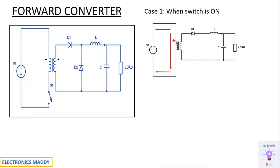The primary winding of a transformer has coils, which is essentially the property of an inductor. So let us assume the primary winding acts as an inductance and charges with a polarity of plus and minus. Consequently, it induces plus and minus at the secondary terminals. Since plus is connected to the anode of the diode, it becomes forward biased and acts as a short circuit. Current starts flowing through this path, the inductor slowly starts charging with polarity plus and minus, and some current flows through the capacitor, which also starts charging.